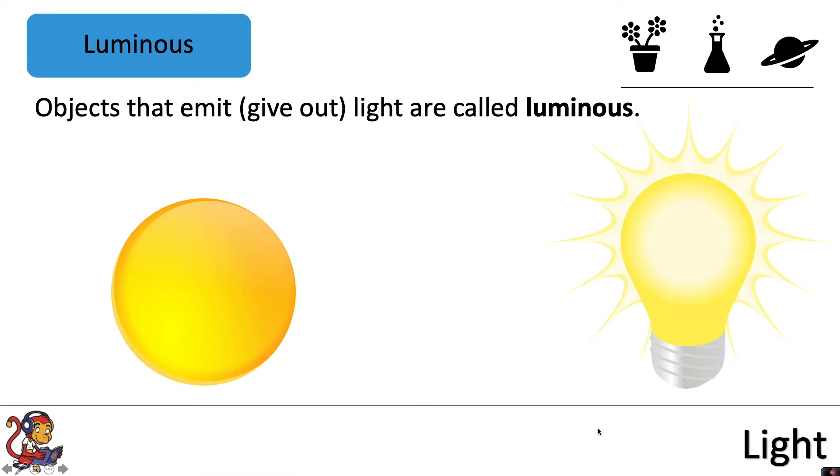Objects that emit light are called luminous. The Sun and light bulbs are luminous objects.